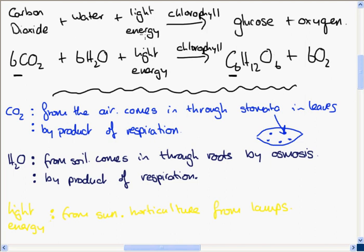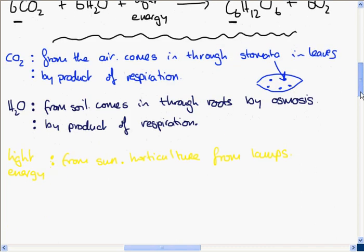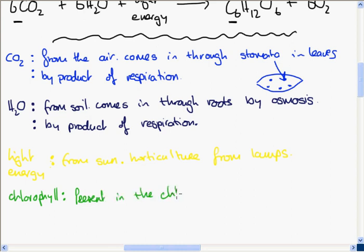Those are the things the plant needs. Chlorophyll is needed as well — where does the plant get it from? It's present in the chloroplast of plant cells, and the chloroplast is where photosynthesis takes place.